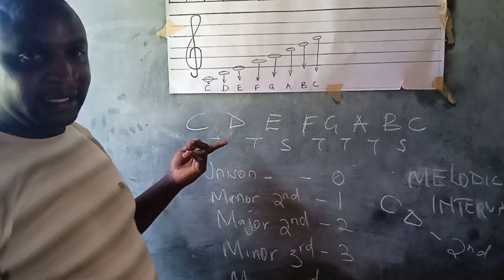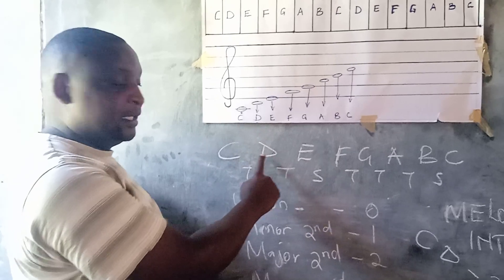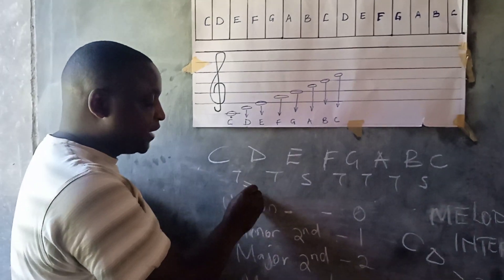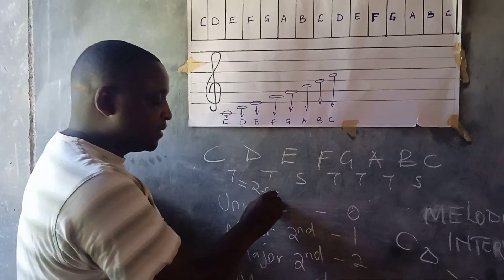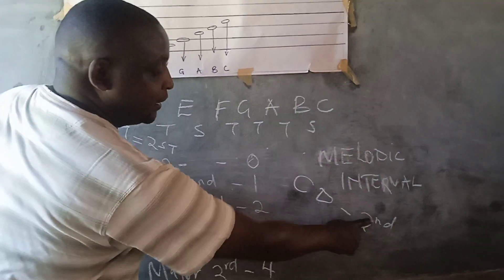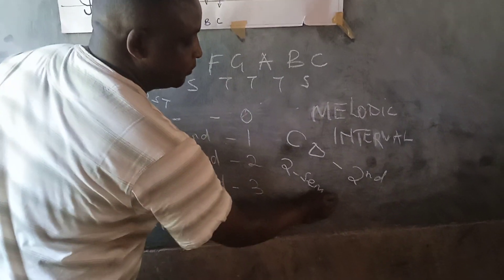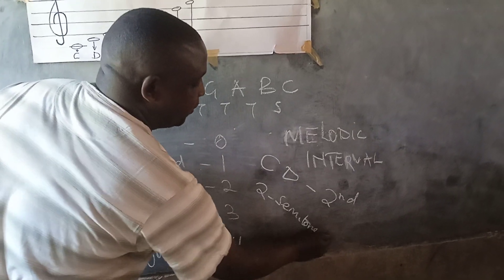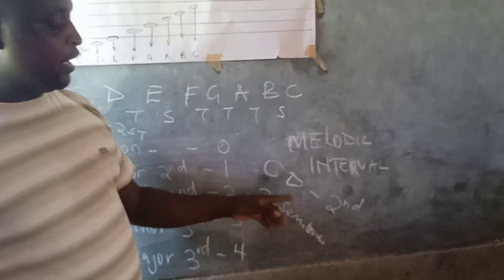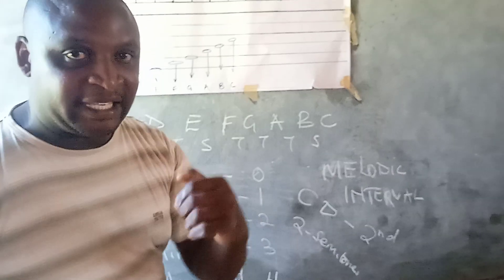Now, we will come back here. Between C and D there is a tone, and when we have one tone it gives us two semitones. So between C and D it is a second, but it has two semitones. Now these two semitones qualify it to become not just a second, but a major second.